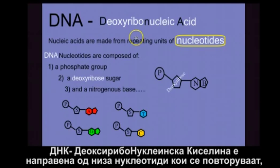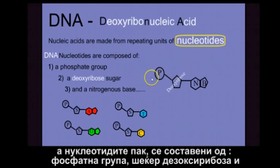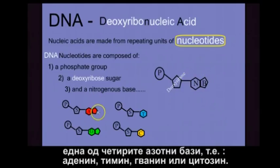DNA, or deoxyribonucleic acid, is made of repeating units of nucleotides. Each nucleotide is made of a phosphate group, a deoxyribose sugar, and one of four nitrogen bases, giving us adenine, thymine, guanine, and cytosine.